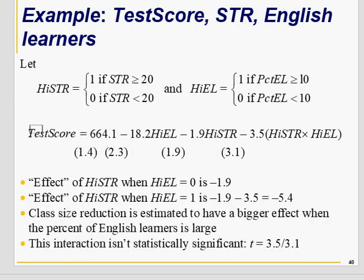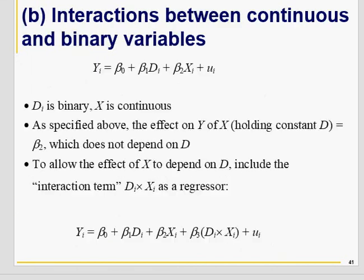Now, for our research question — whether class size reduction leads to an increase in test score — you have two binary variables here. If class size is greater than or equal to 21, it's 1; less than 20, it's 0. Percentage English learners: greater than or equal to 10 is 1, less than 10 is 0.